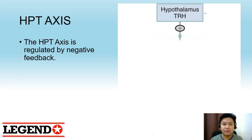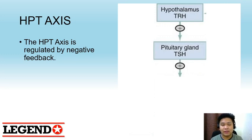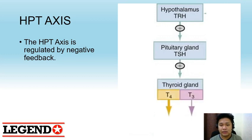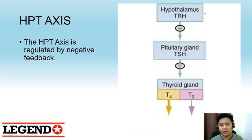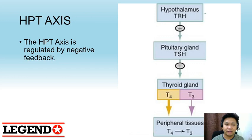The hypothalamus produces TRH, or thyrotropin-releasing hormone, which stimulates the pituitary gland to produce TSH, or thyroid-stimulating hormone. TSH stimulates the thyroid gland to produce and secrete T4 and T3. T4 can then be converted in the peripheral tissues to T3 in what we call peripheral conversion.